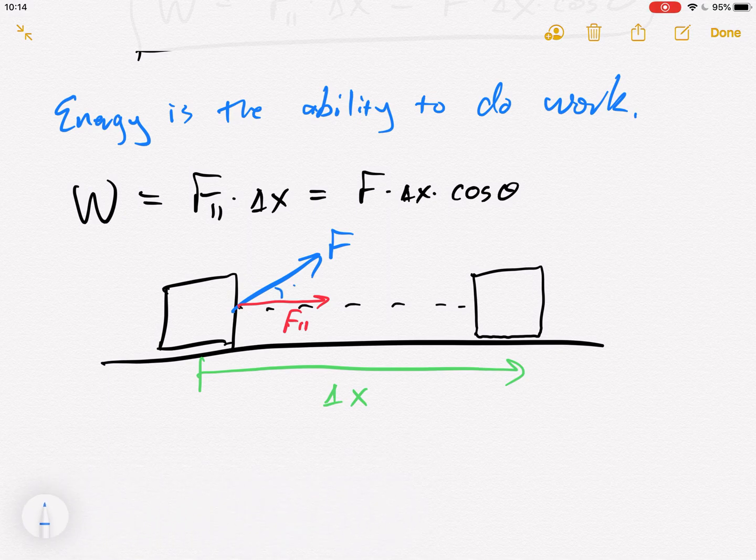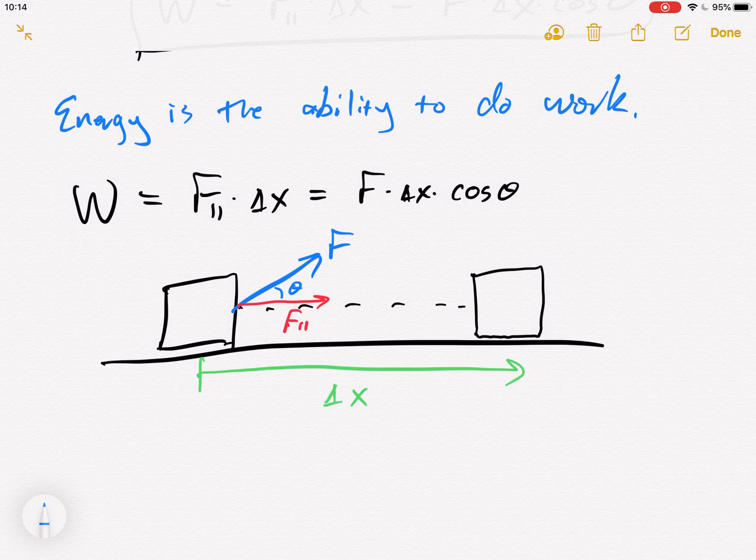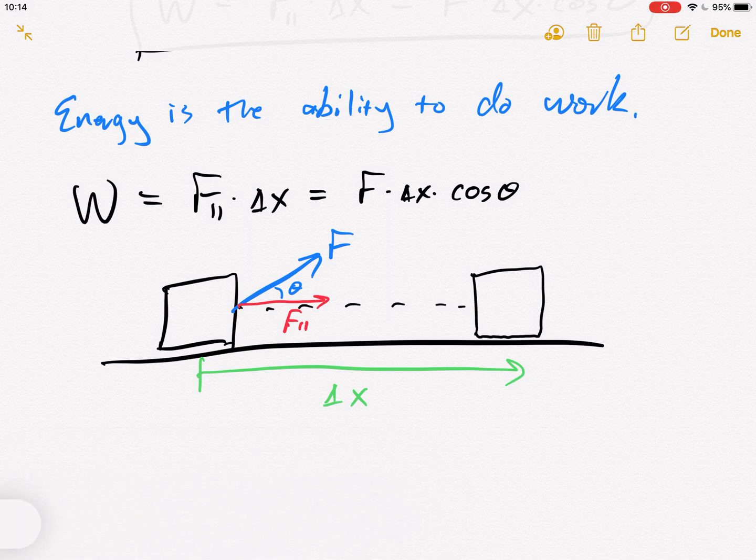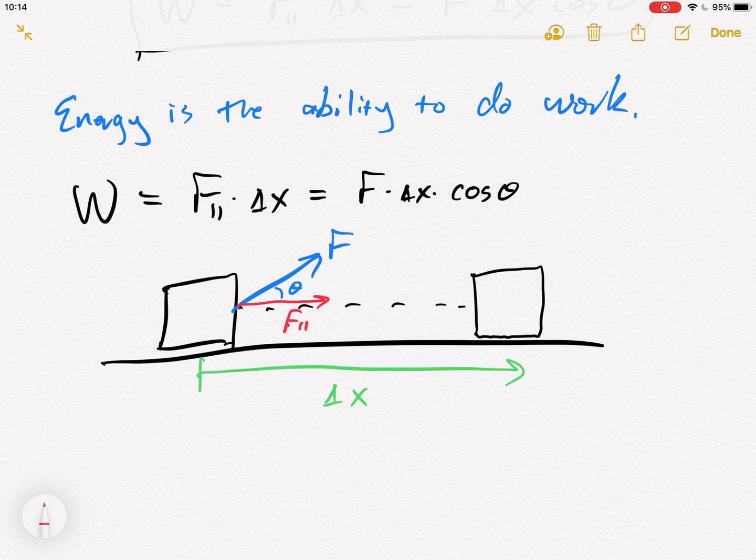So the point is the part of the force that points parallel to delta x. And in fact, I could define here as my theta. That force parallel goes into increasing the energy of this box. How much does it increase the energy of the box? Let's see if we can figure that out.